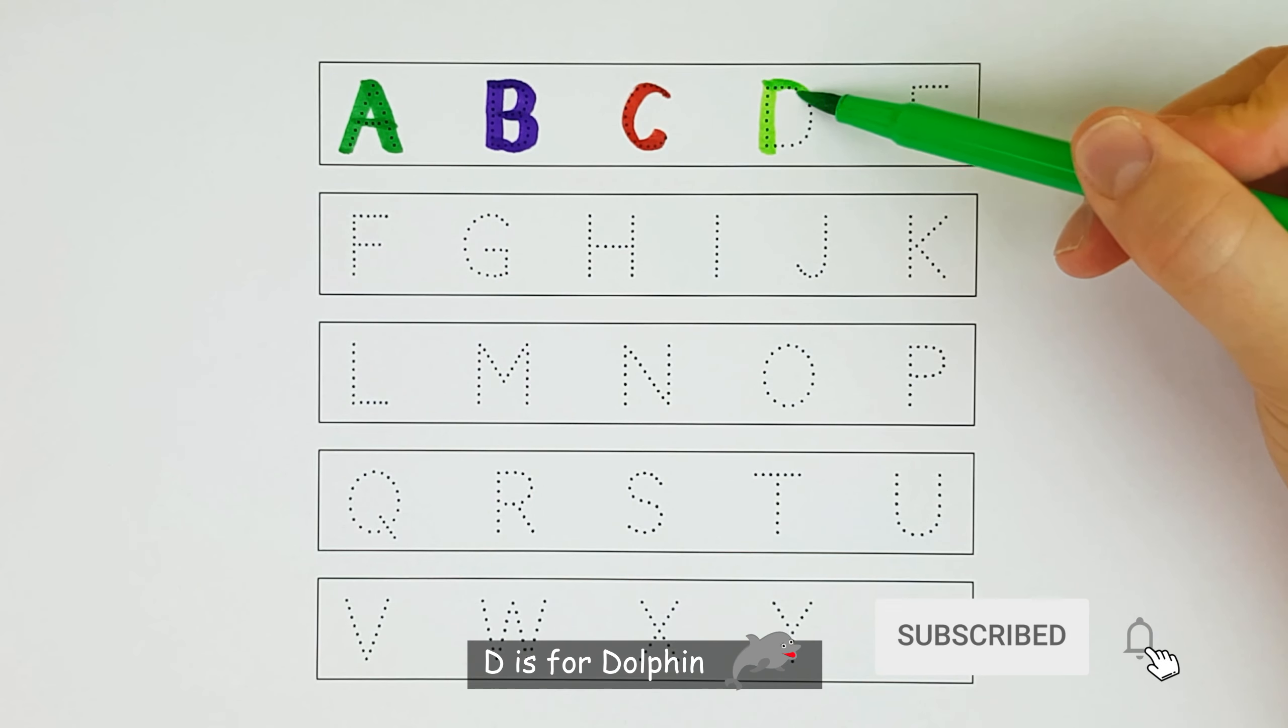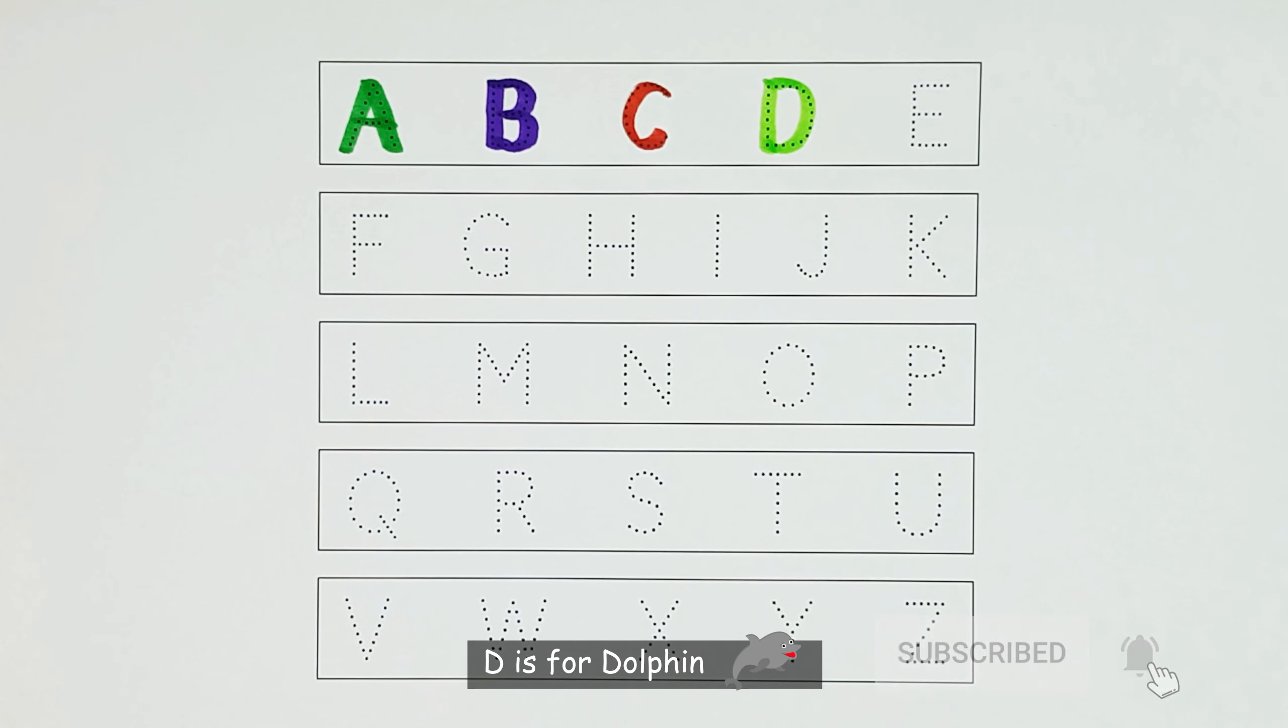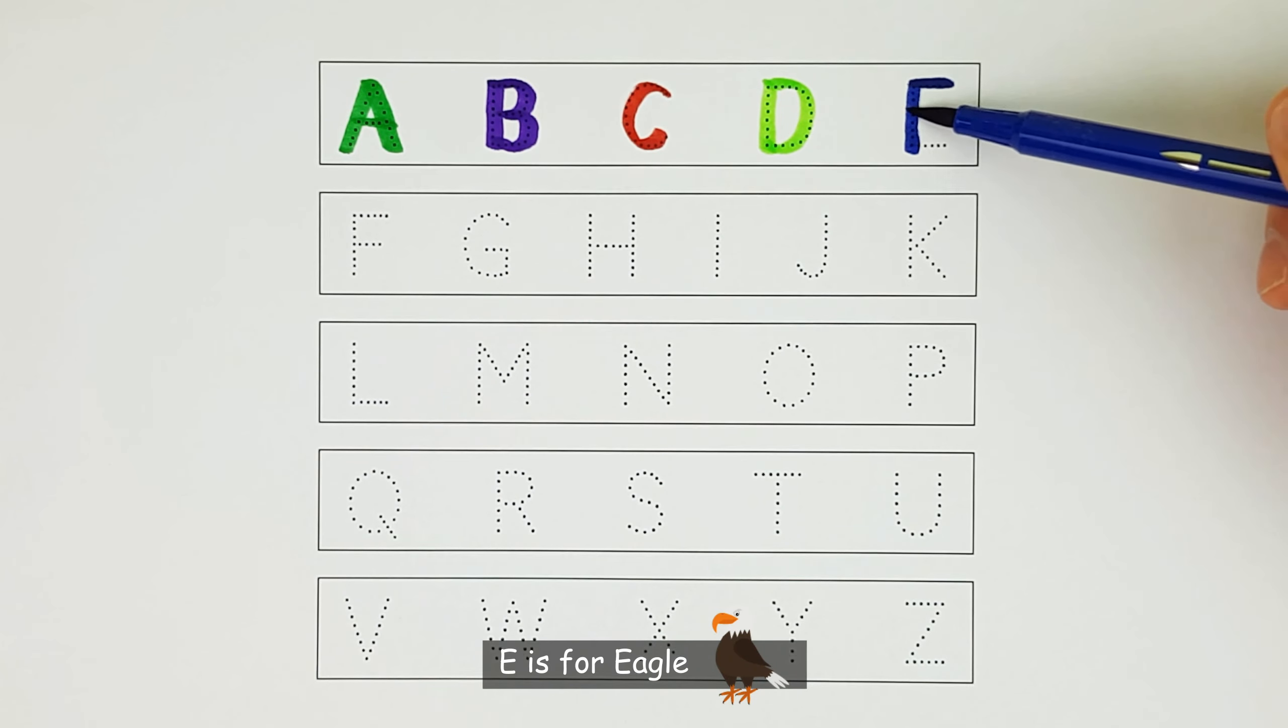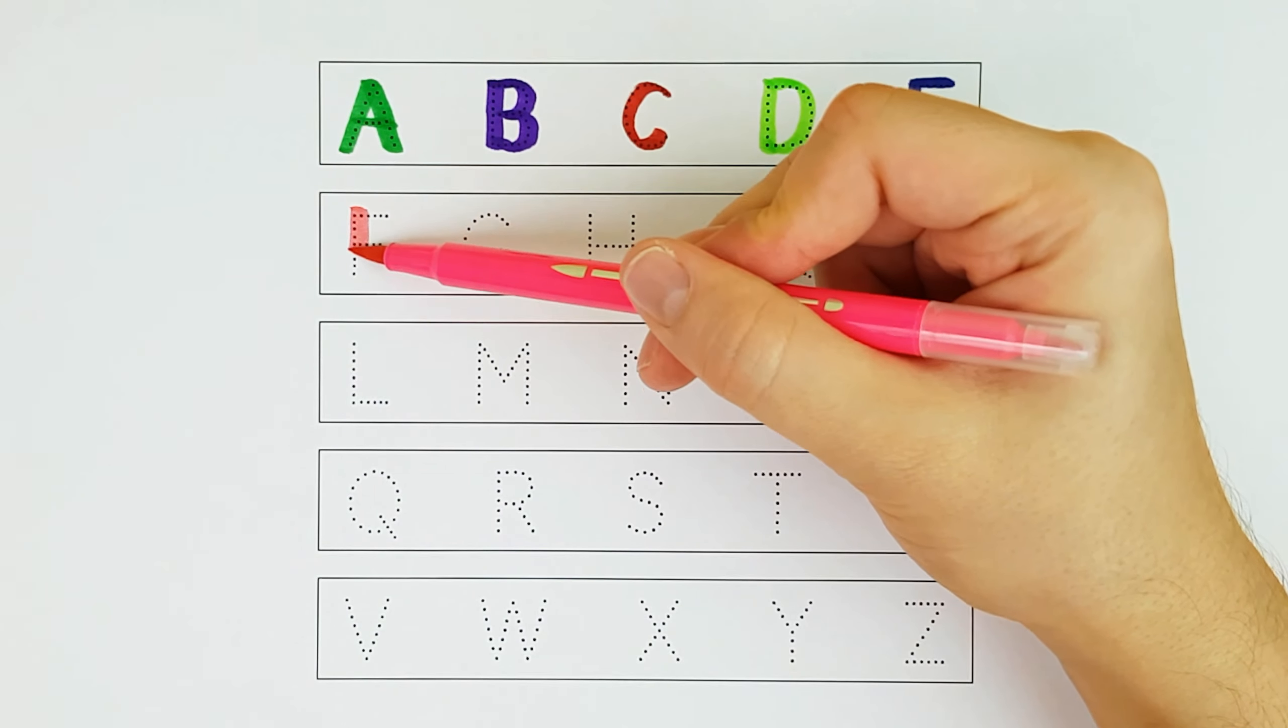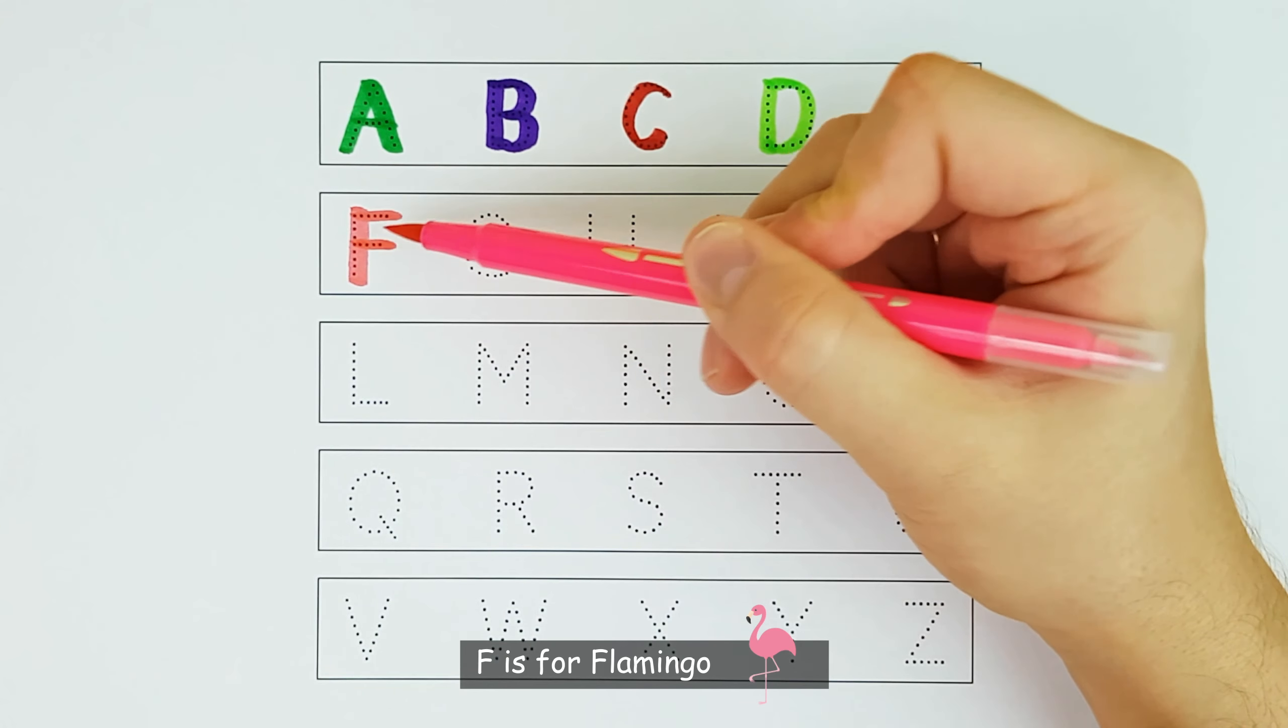D. D is for Dolphin. D. E. E is for Eagle. E. F. F is for Flamingo. F.